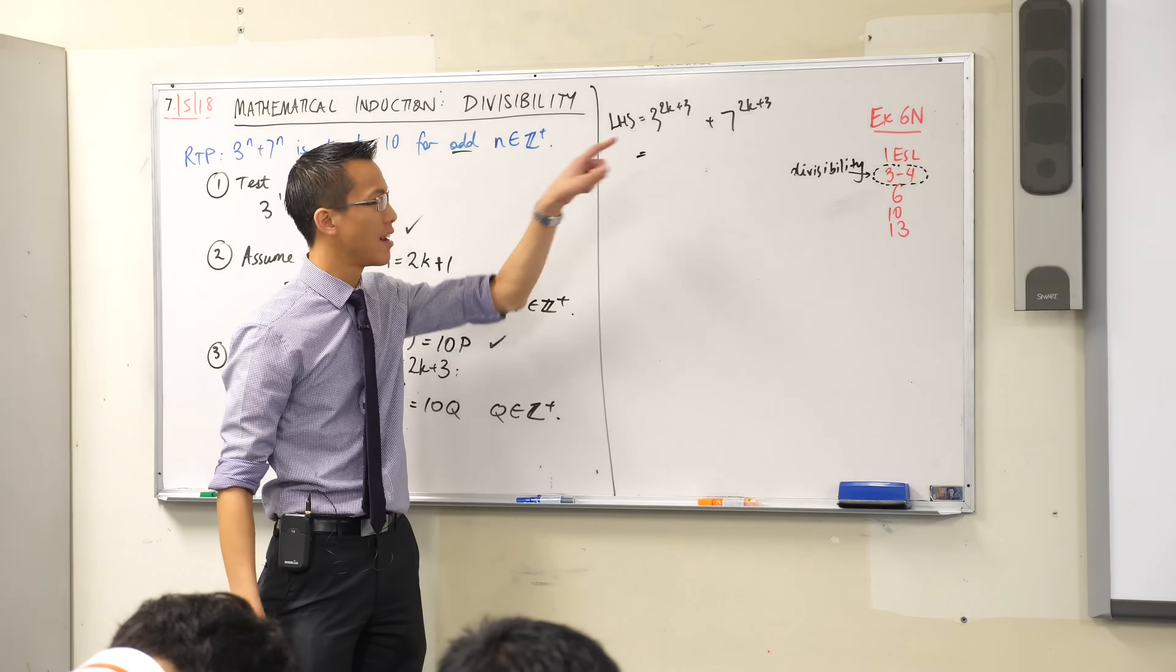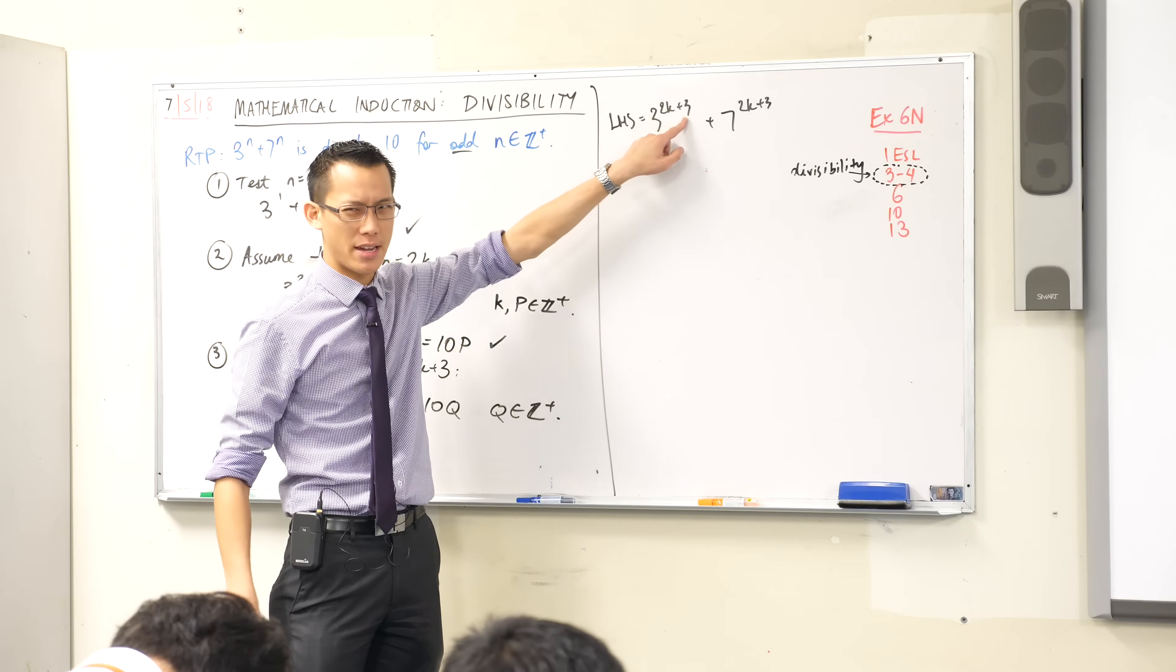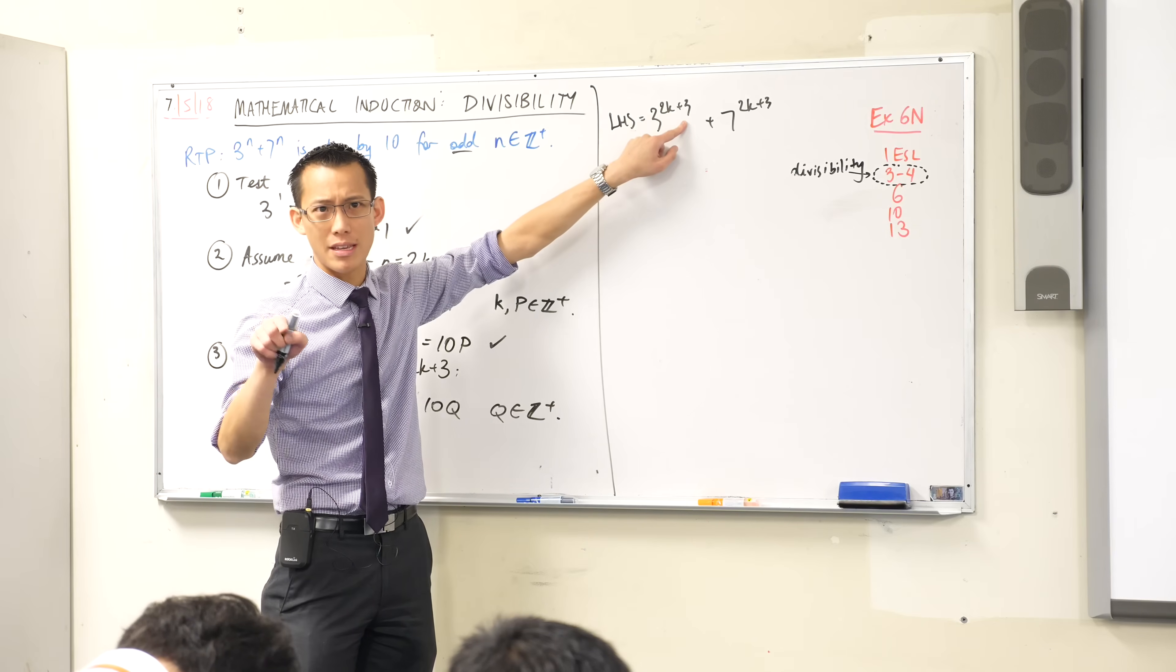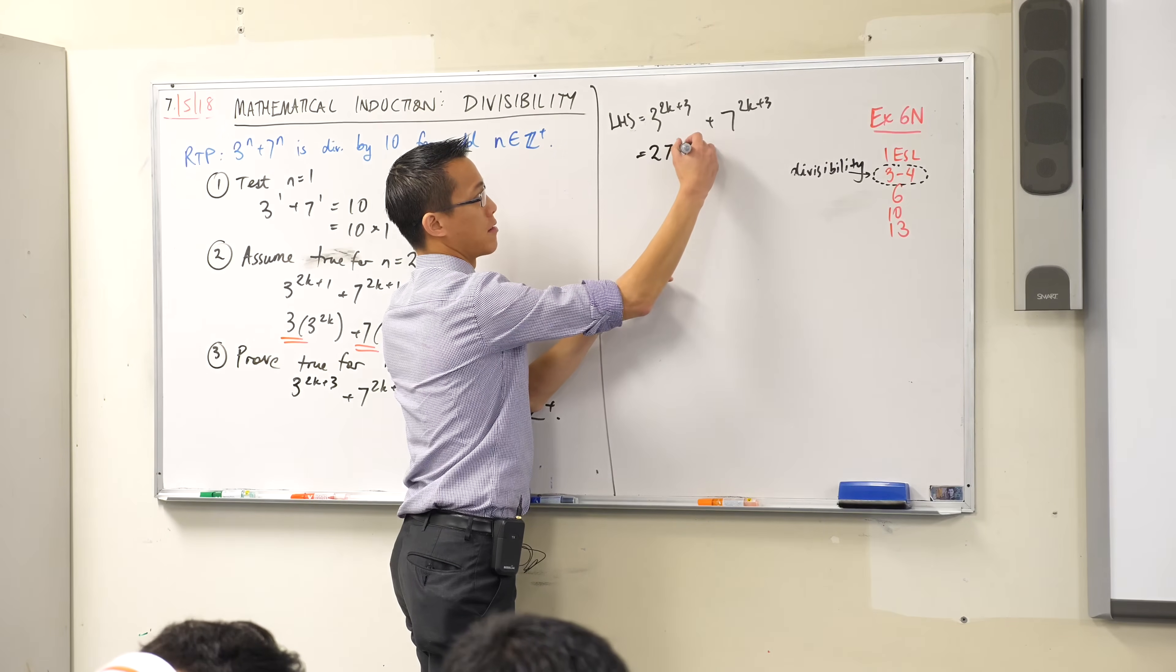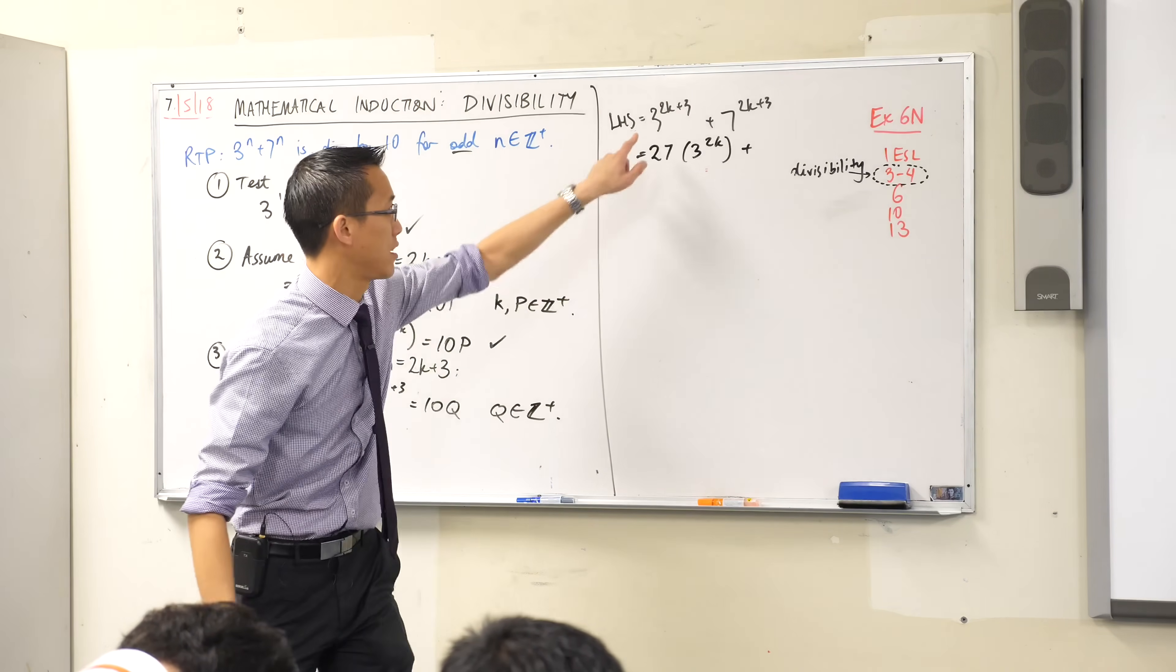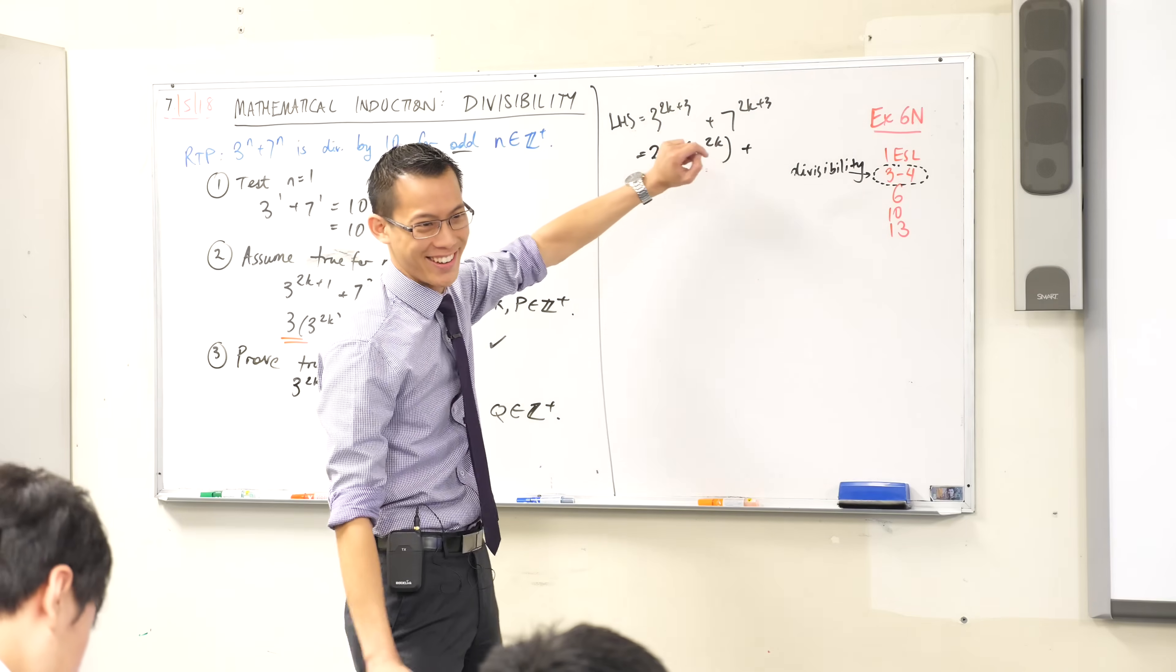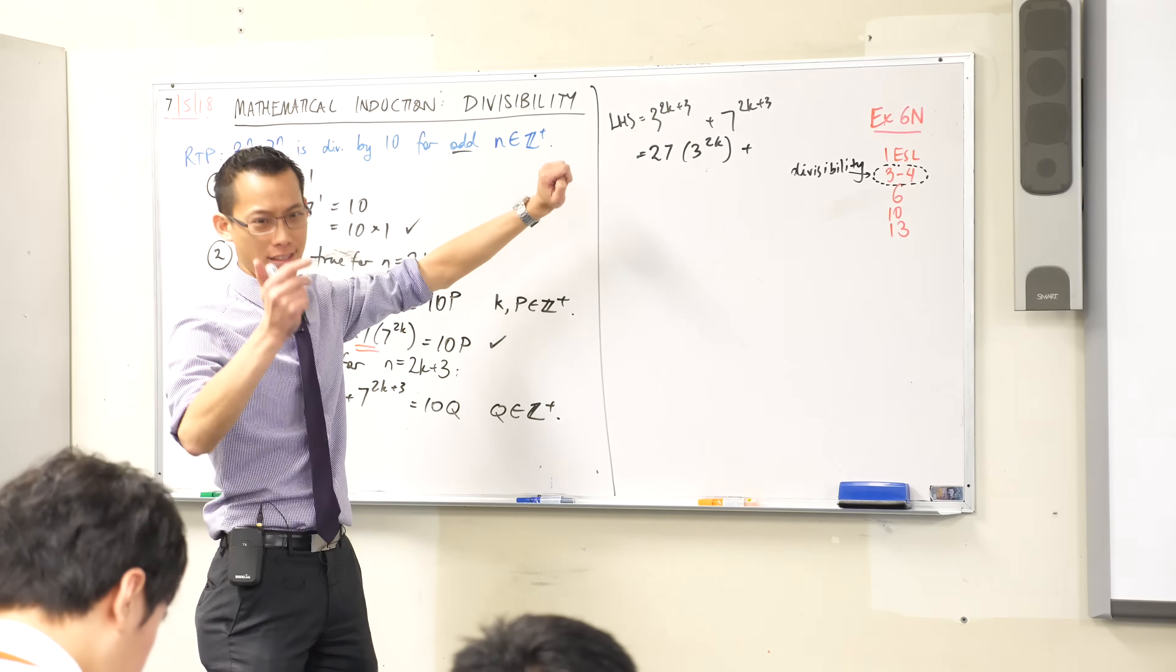How many 3 to the 2k's are there in here if I factor out this plus 3? How many are there? What is 3 to the 3? It's 27, right? How many 7 to the 2k's are there? That's how many 3 to the 2k's. How many 7 to the 2k's are there? How are you with your powers of 7? 7, 49, 343.